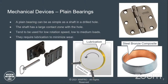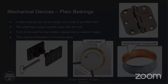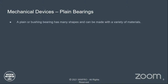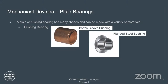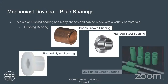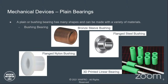Here's a plane bearing with a steel ring and a bronze composite material on the inside — bronze is a very special material. A plane or bushing bearing has many shapes and can be made with a variety of materials: a bronze sleeve bushing, a flanged steel bushing, a flanged nylon bushing, or even a 3D printed linear bearing where the bearing is held stationary and the rod slides axially through it.